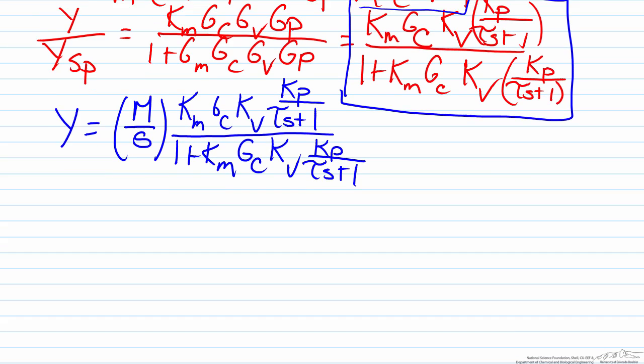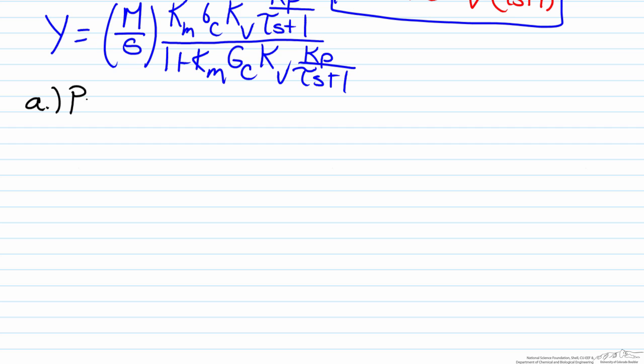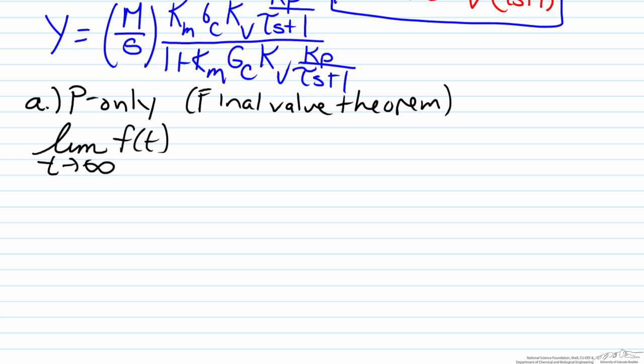So first we will start with a P only control scheme. And there are a number of ways in which we can determine the steady state value of this. The method that we will use here is we will take advantage of the final value theorem. So the final value theorem states that the limit of a function in the time domain as it goes to infinity is equal to the limit of that function in the s domain as s approaches zero multiplied by s.